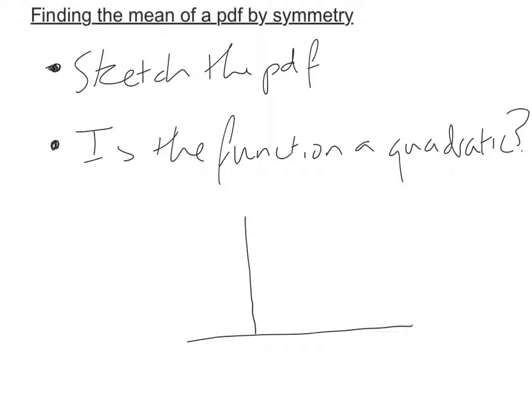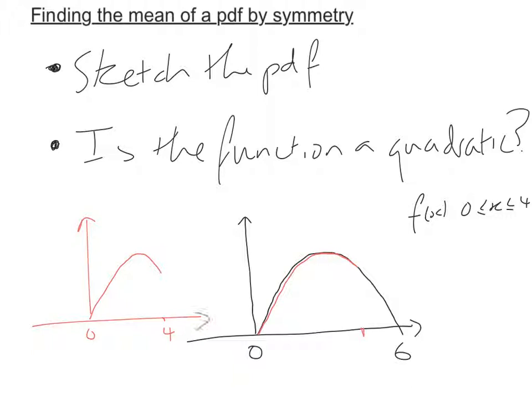So if I had a negative quadratic, but let's say between 0 and 6, it was symmetrical. But if our function was only between 0 and 4, it would not be a symmetrical PDF because our PDF would just go up to about there. Our PDF would look like that between 0 and 4 and therefore not symmetrical. So it's very, very important to ensure that you sketch the PDF before making a judgment on whether it's symmetrical or not.